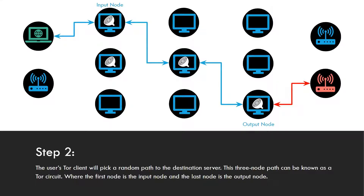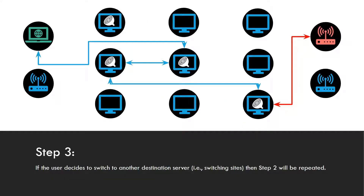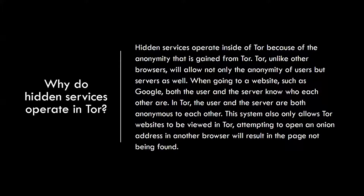Once that occurs, you enter the Tor network through an input node and bounce around three random computers. The path will never be the same — it is always randomized. The output node then sends you to wherever you want to go, whether a website or a hidden service, and this process repeats every time you choose a new address.